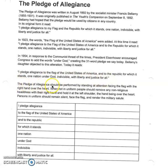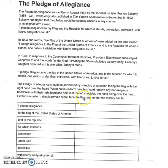The Pledge of Allegiance should be performed by standing at attention, facing the flag, with your right hand over the heart. When not in uniform, people should remove any non-religious headdress with their right hand and hold it at their left shoulder, the hand being over the heart. Persons in uniform should remain silent, face the flag, and render the military salute.